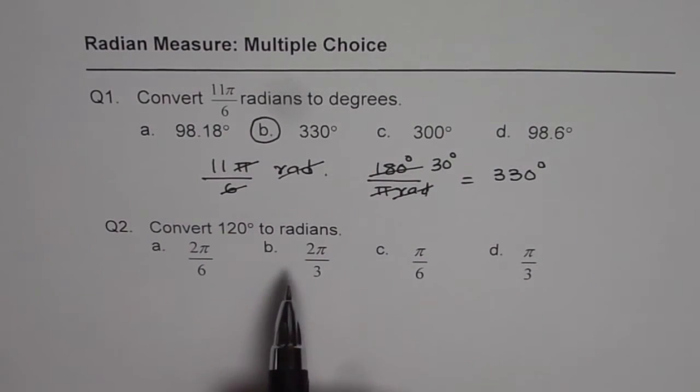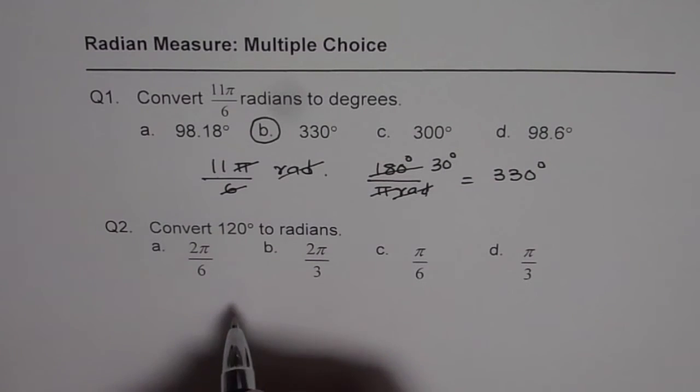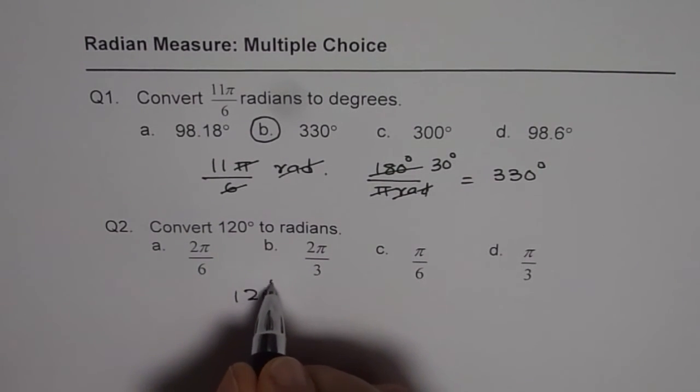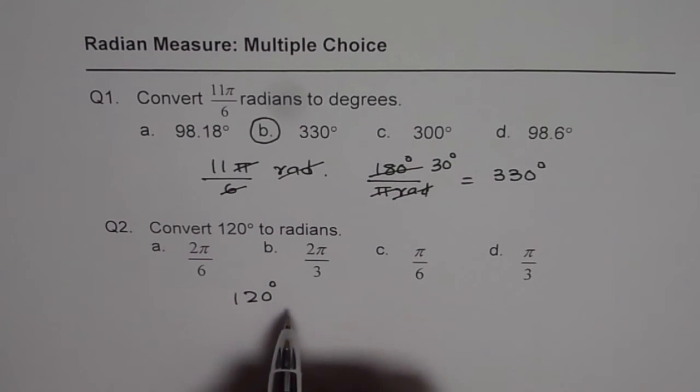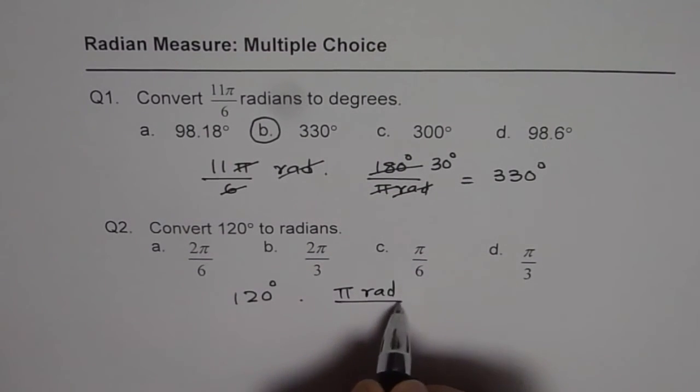Let's do this process once again. This time we will convert 120 degrees to radians. So what we have is degrees. We want in radians. So we want radians on the top. That is π radians divided by 180 degrees.